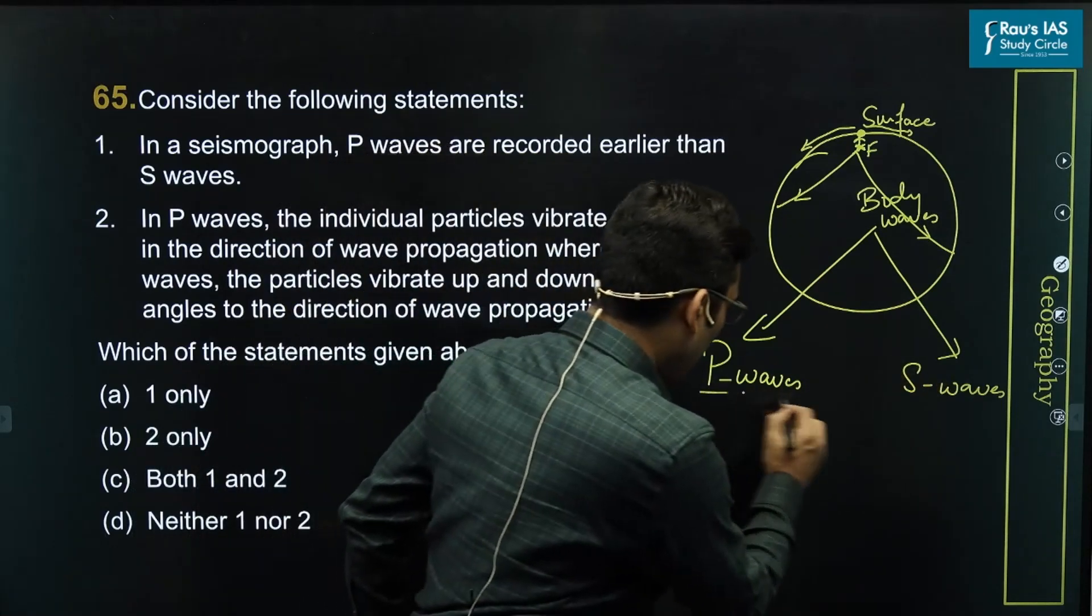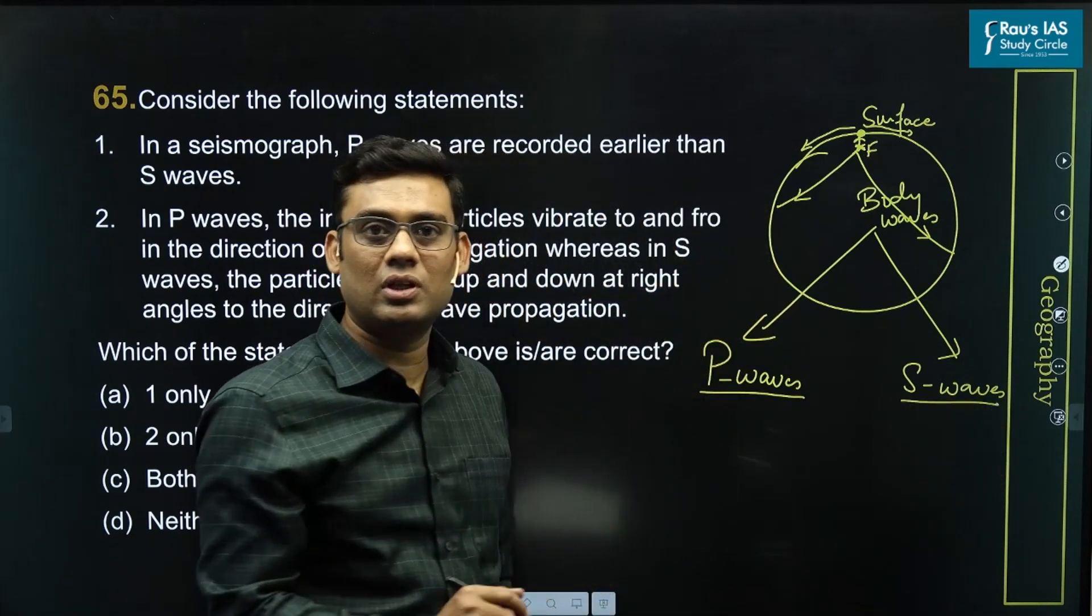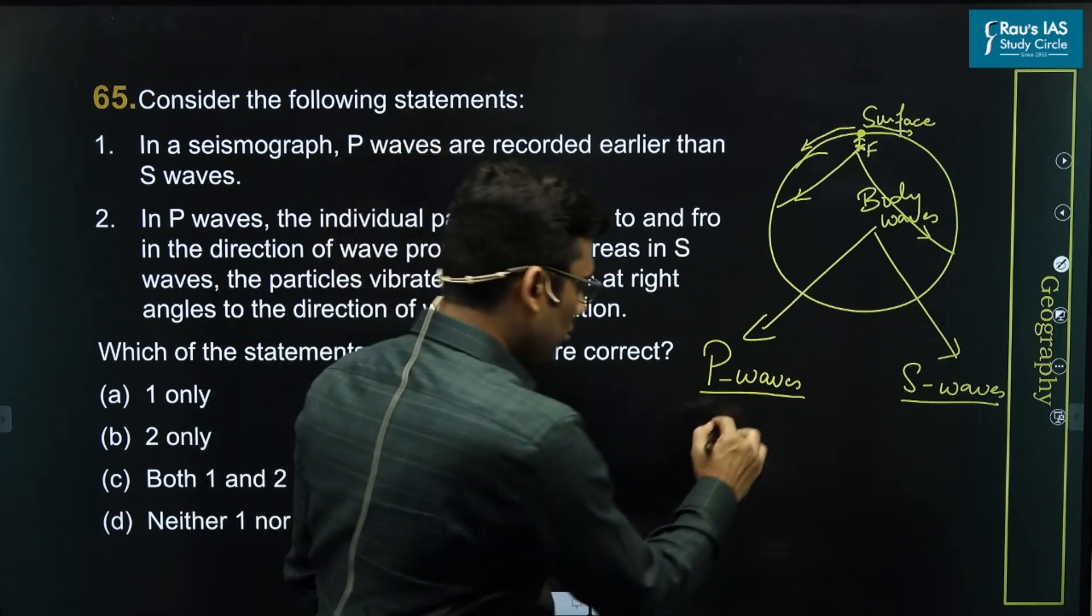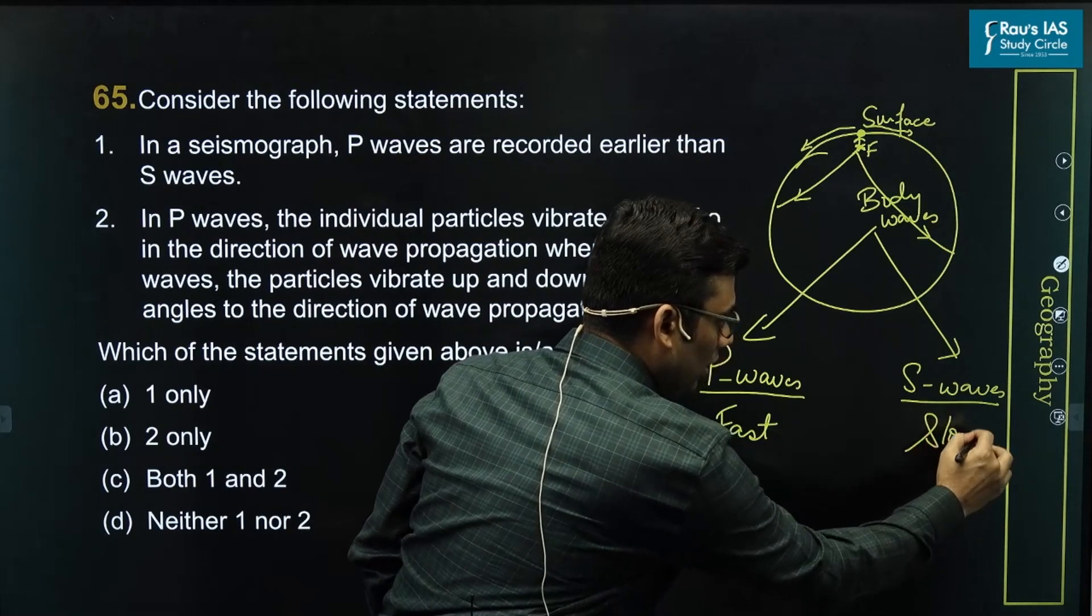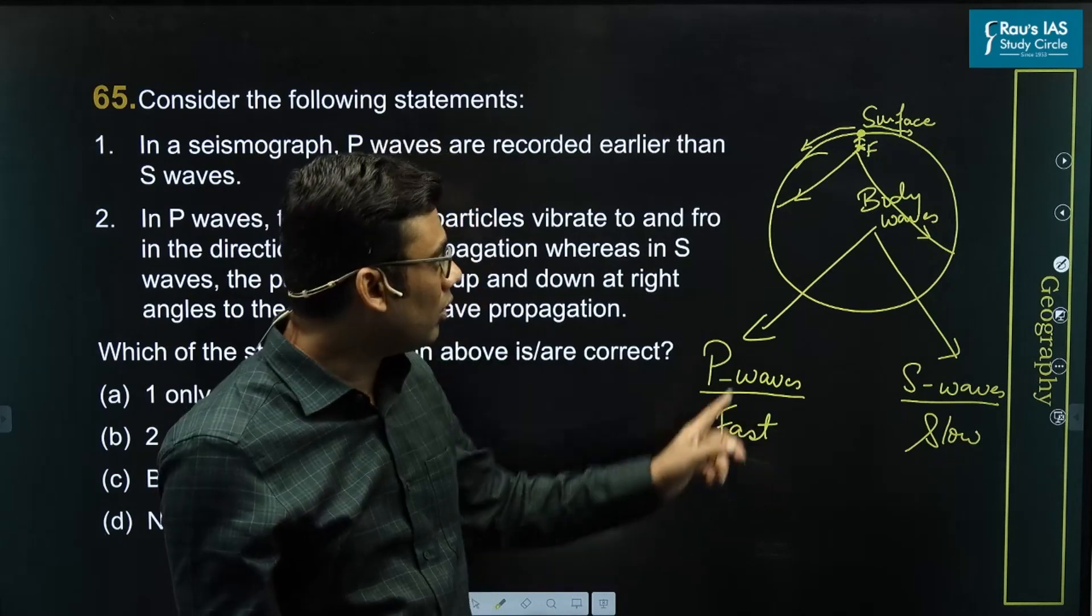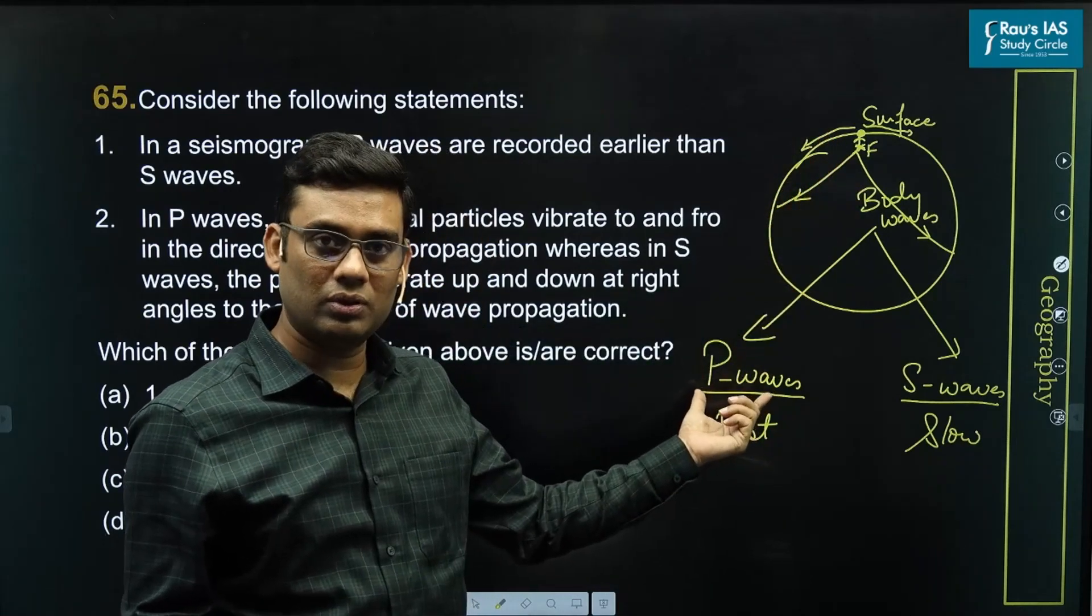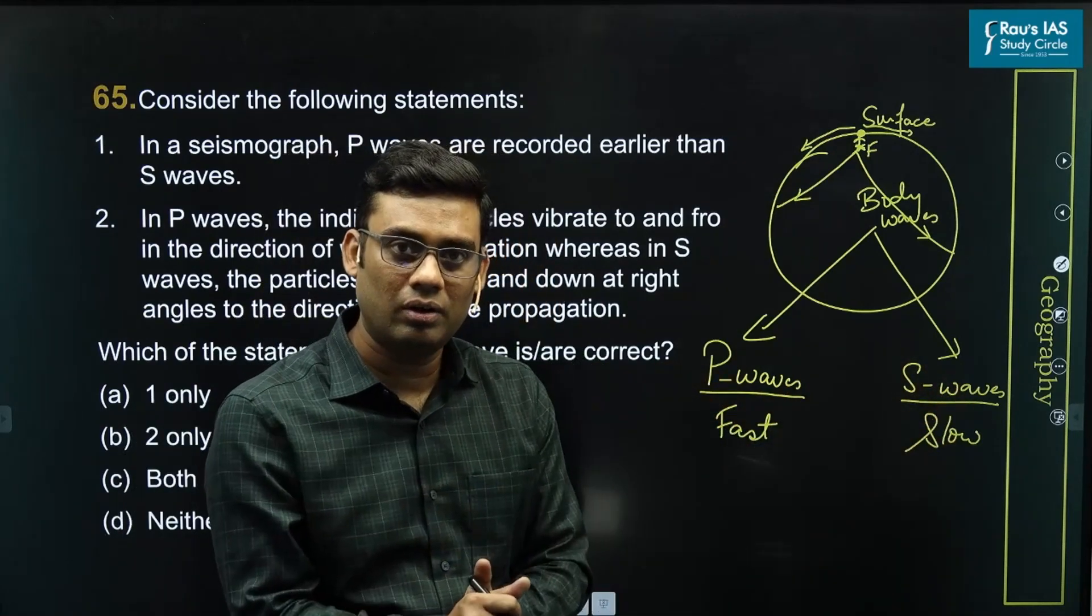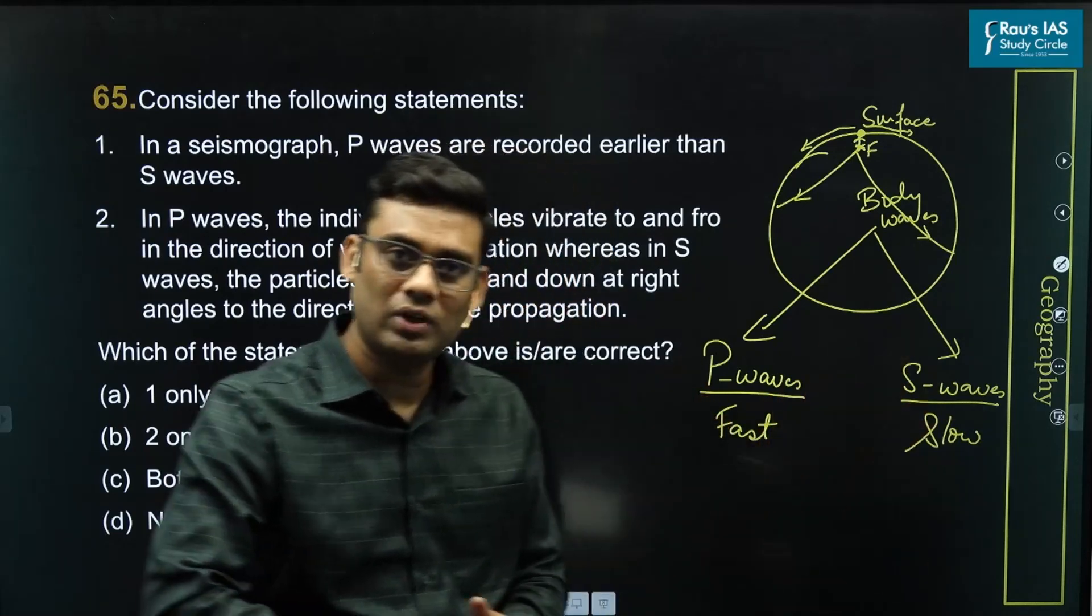P waves, S waves, basic differences if we see. These are called primary waves. The reason is because they travel fast. So these are fast. These are slow relatively. And so these are the waves which reach first on the surface from the focus. And that's why primary waves. Secondary waves reach after some time lag. That's why the name secondary waves. So primary, secondary, first difference.